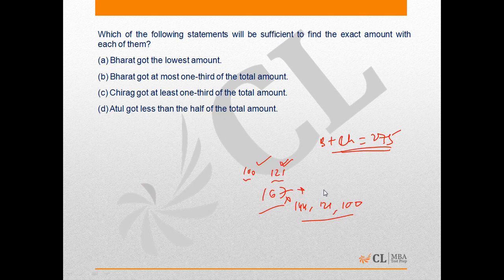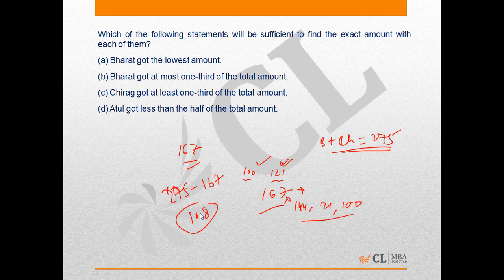Statement 3 says Chirag got at least one-third of the total amount, meaning at least 167. This means Bharat cannot get more than 275 minus 167, which is 108. Since Bharat's amount is a perfect square and the only perfect square between 100 and 108 is 100, Bharat gets 100 and Chirag gets 175. Using statement 3 alone, we can uniquely determine all amounts. Hence, option C is the correct answer.